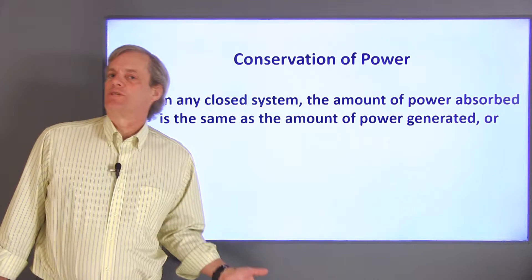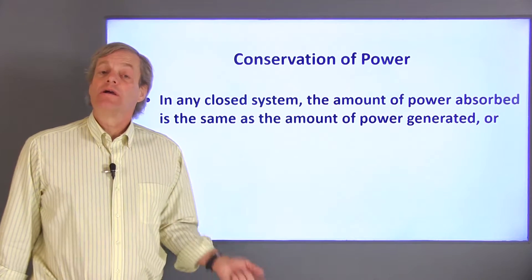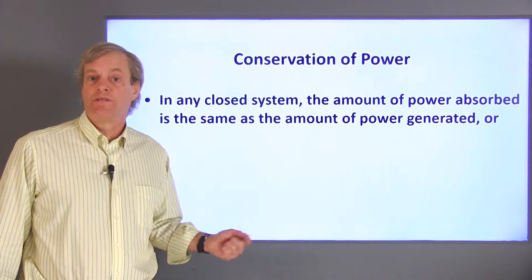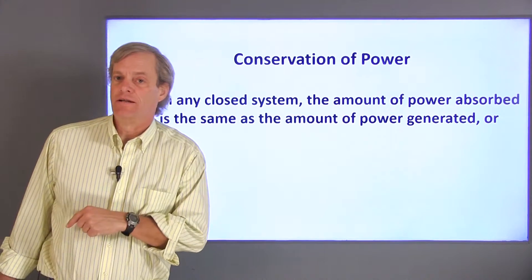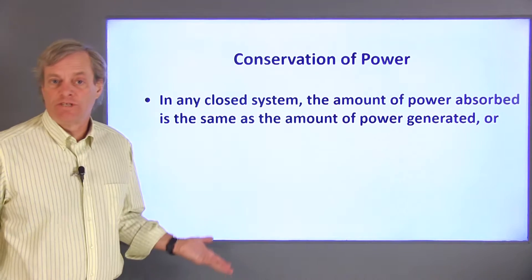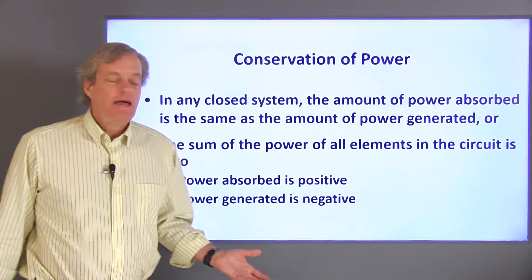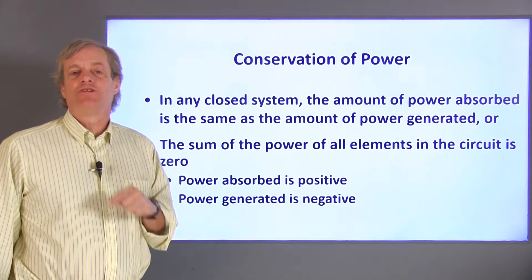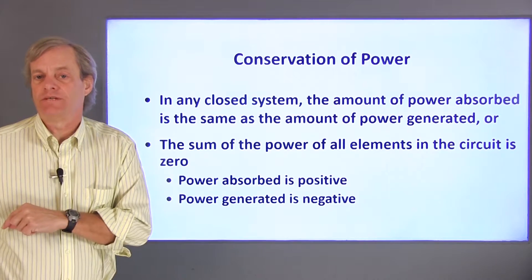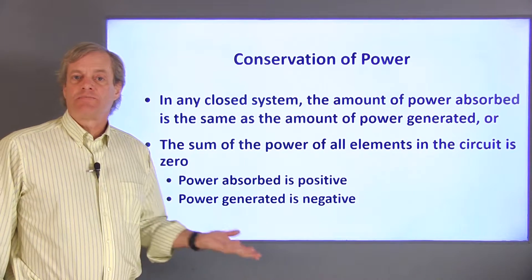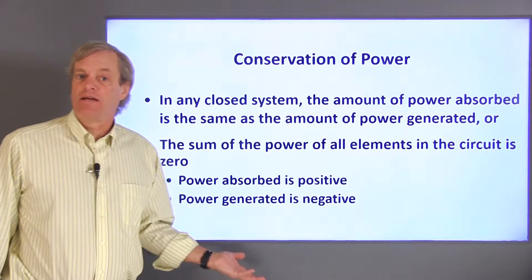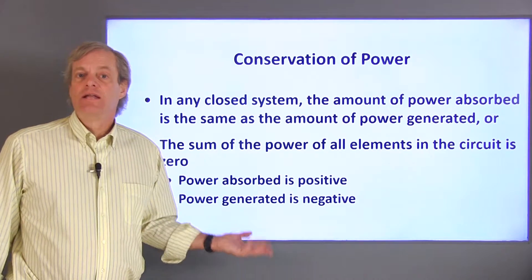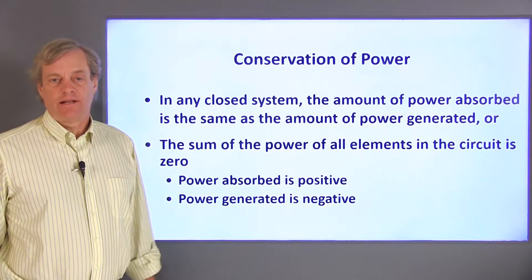Let's take a look at the principle of conservation of power. Conservation of power simply states that in any electrical circuit, the total power absorbed is balanced by the total power generated. This fact can be very useful for double-checking results of analyses and measurements. An alternate way of stating the law of conservation of power is that the algebraic sum of all the power in the circuit must be zero. Since absorbed power has a positive sign and generated power has a negative sign, we get zero if the absorbed and generated powers are equal.